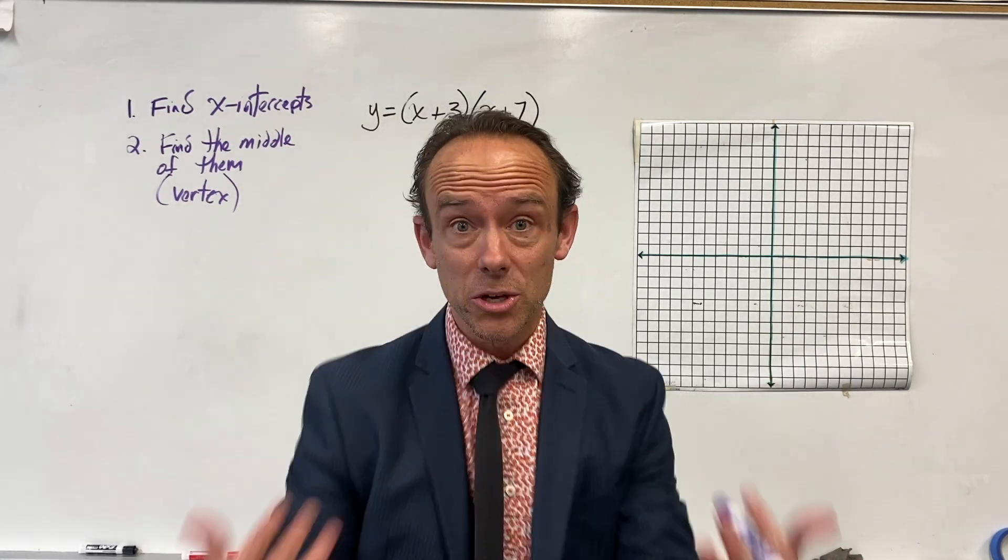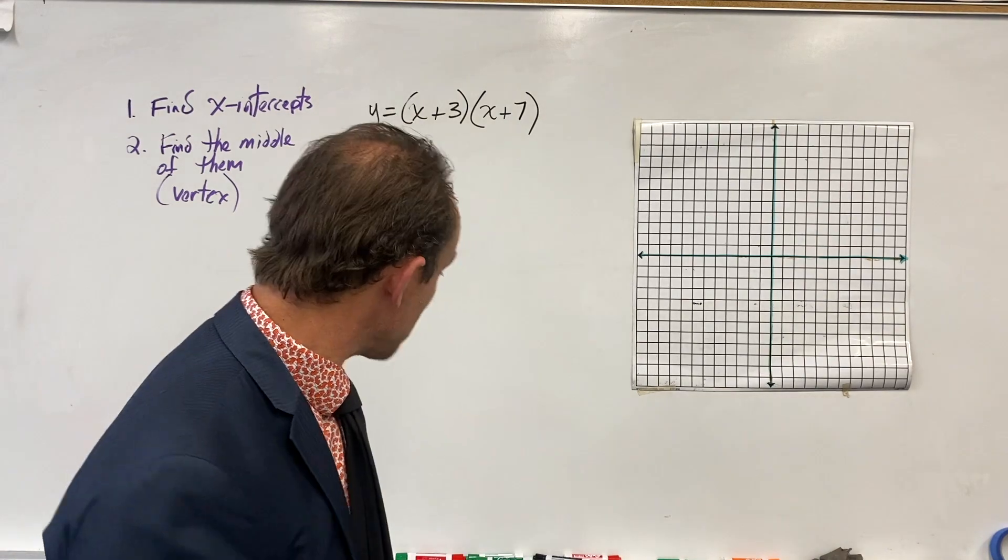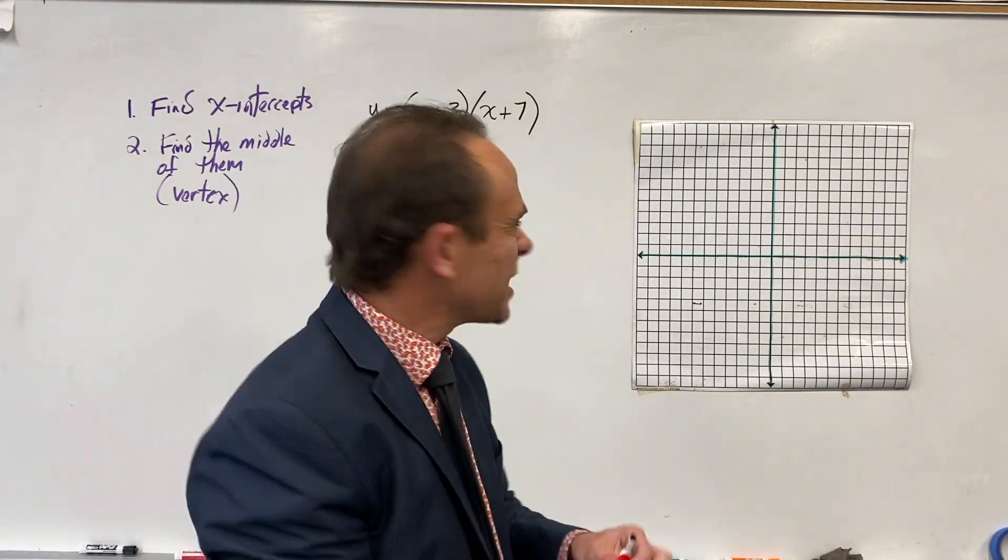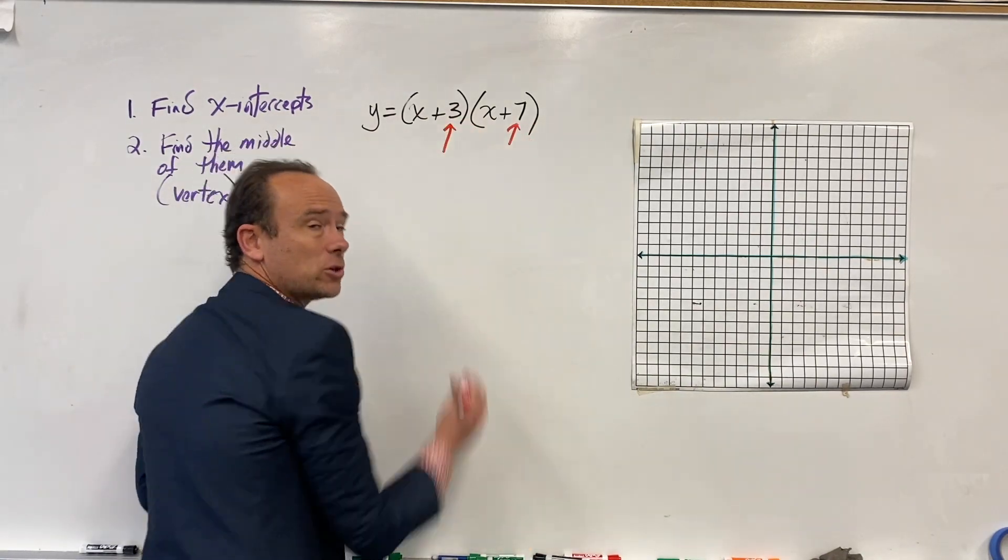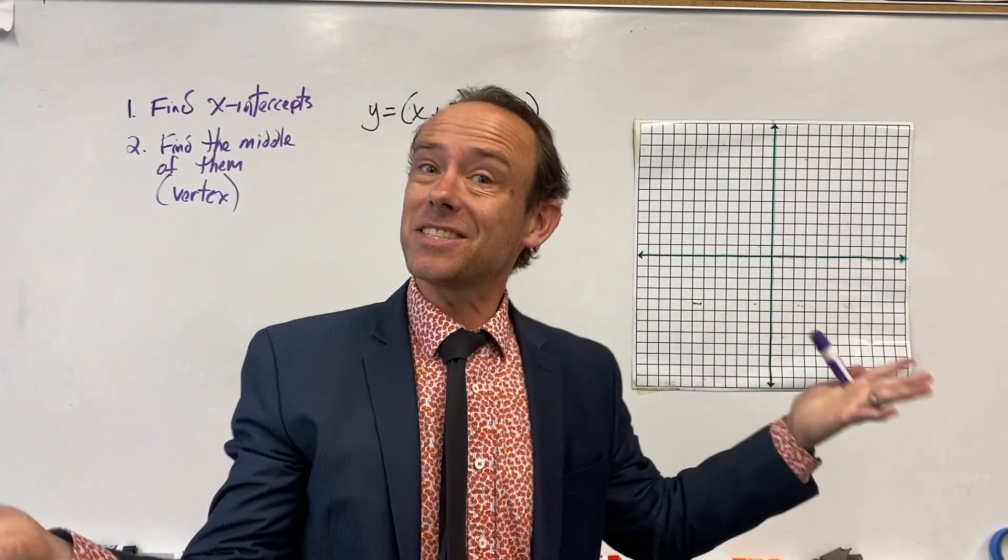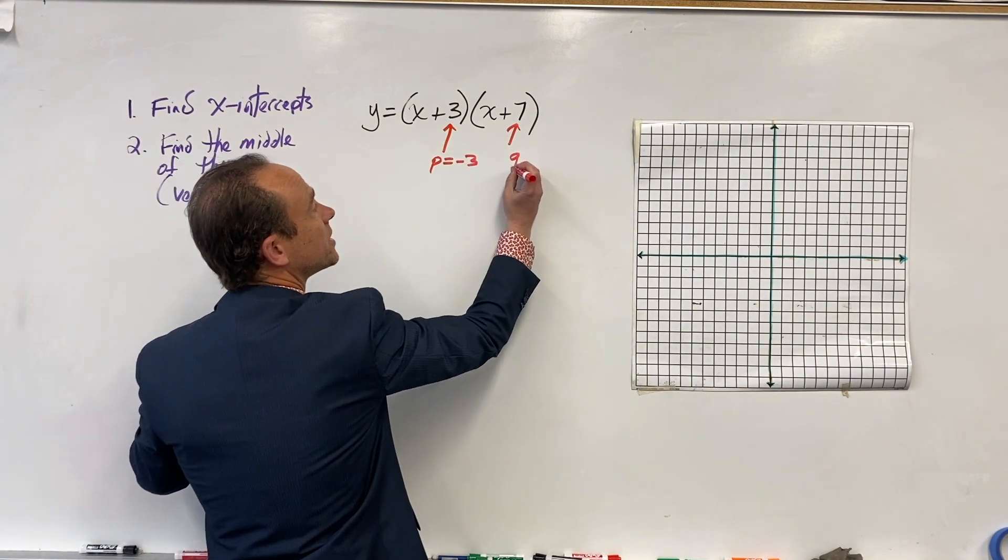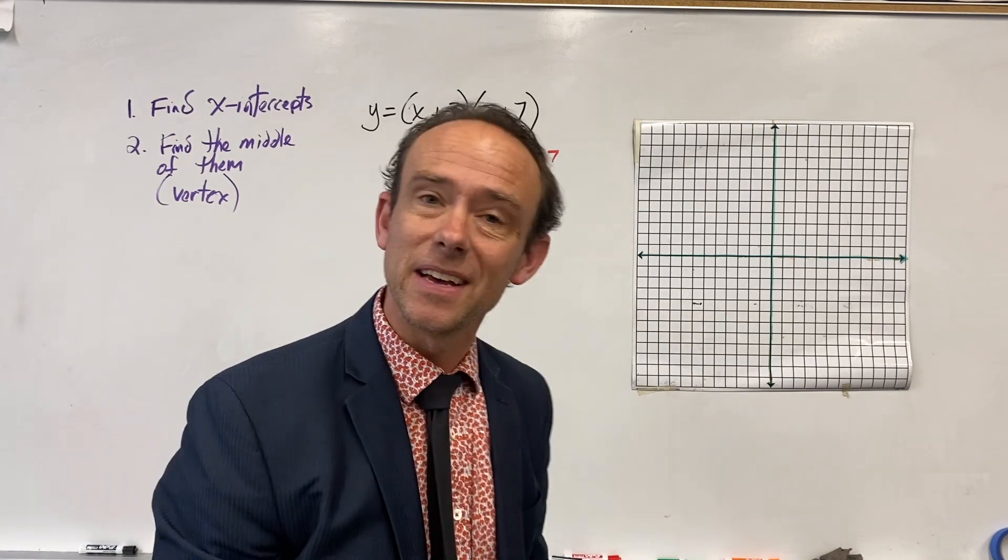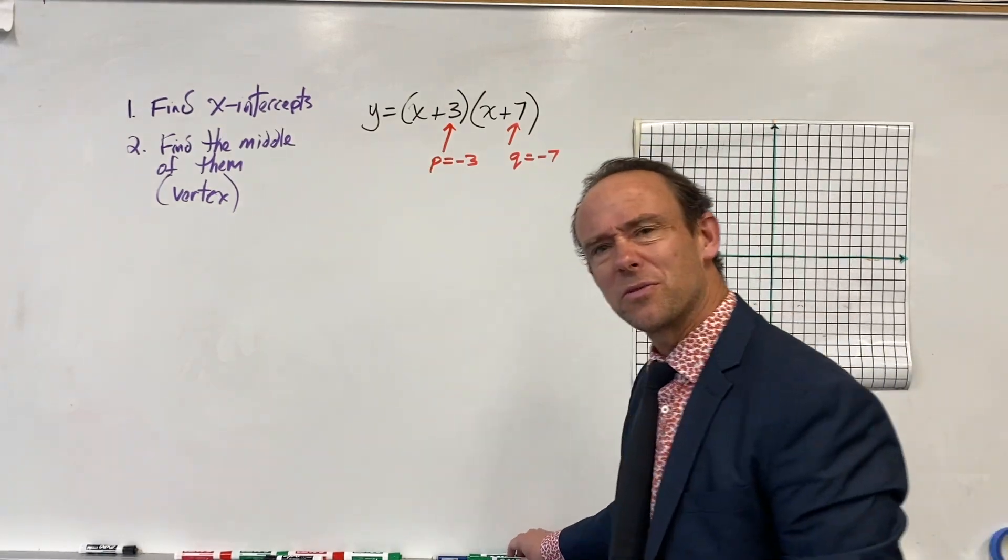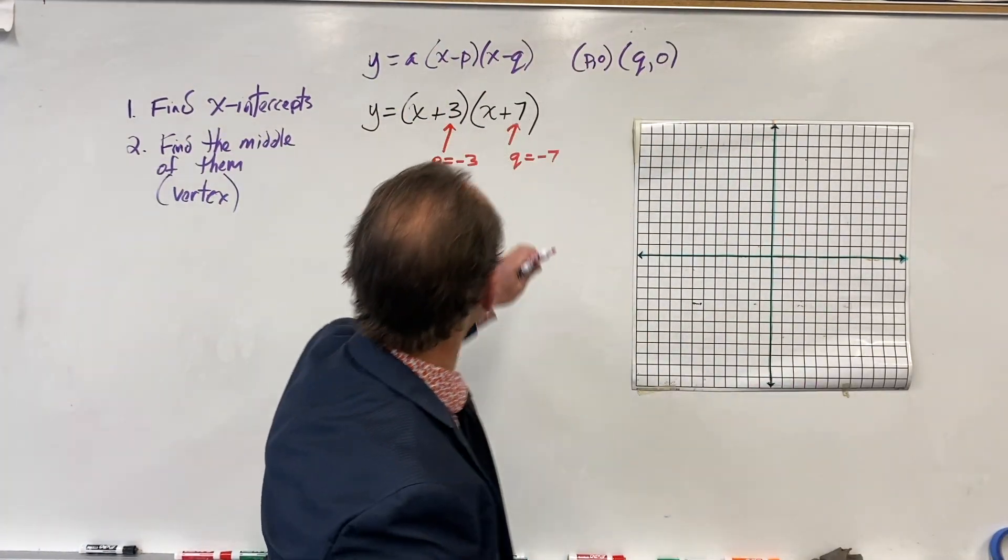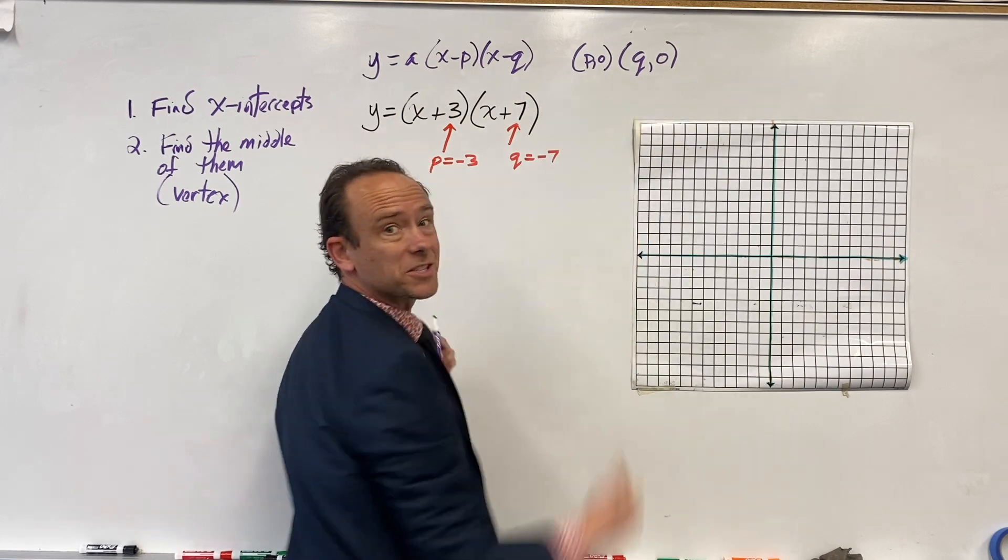So we're going to find the middle, that's going to be where the vertex is. This is our first equation. If we're going to find the x-intercepts, we could use mathematical structure. We know that when an equation has intercept form, our P and Q values are going to be where the x-intercepts are located. In this case, your P value is -3 and your Q value is -7.